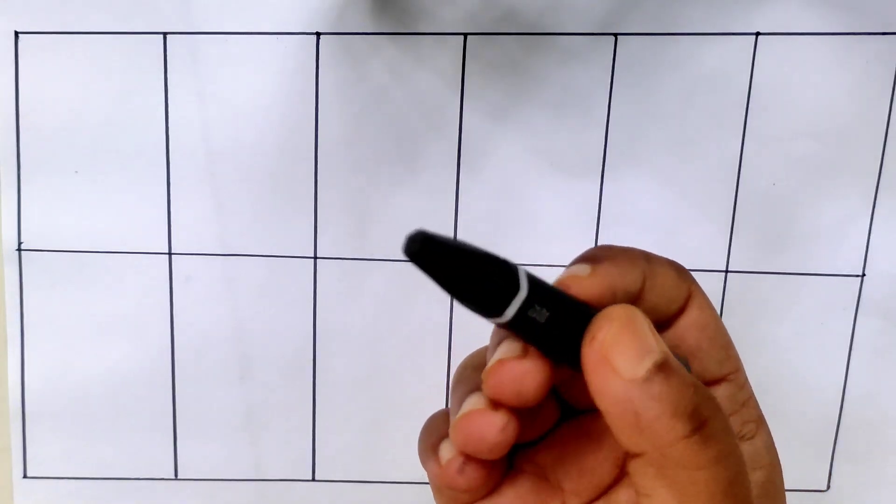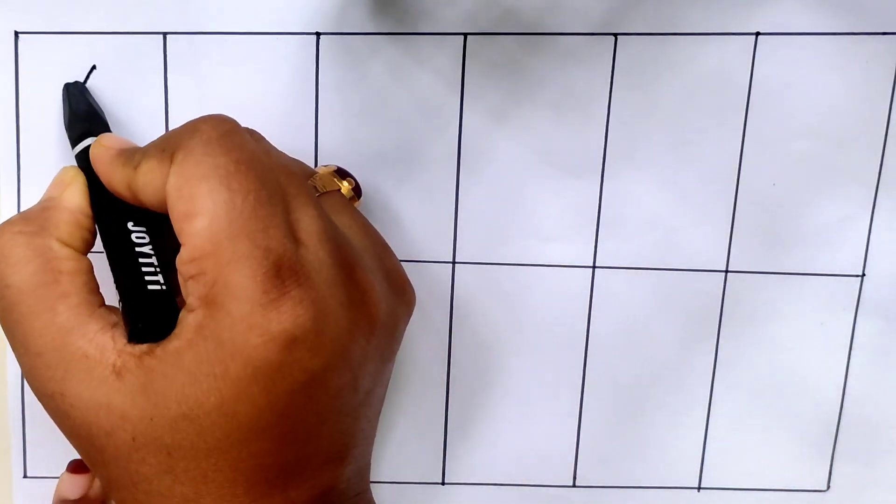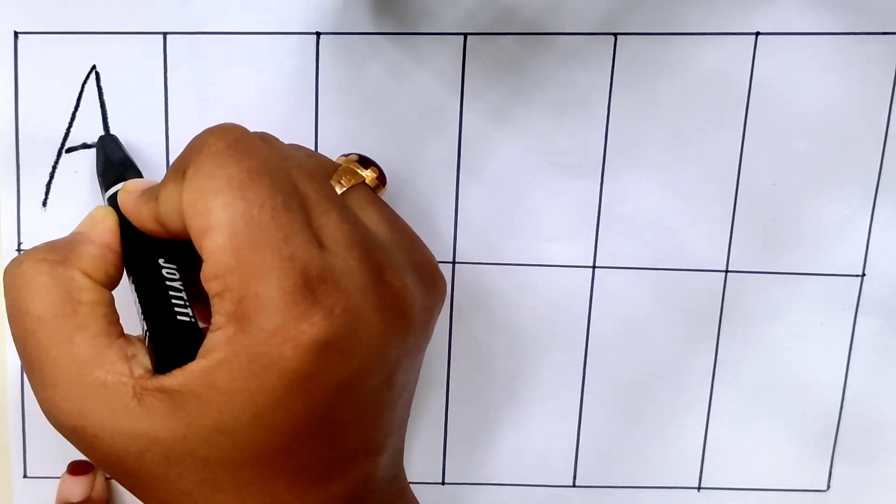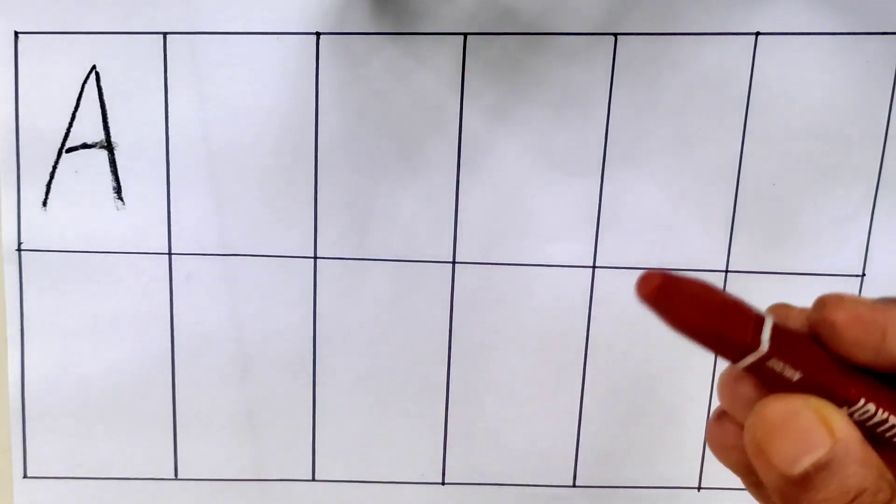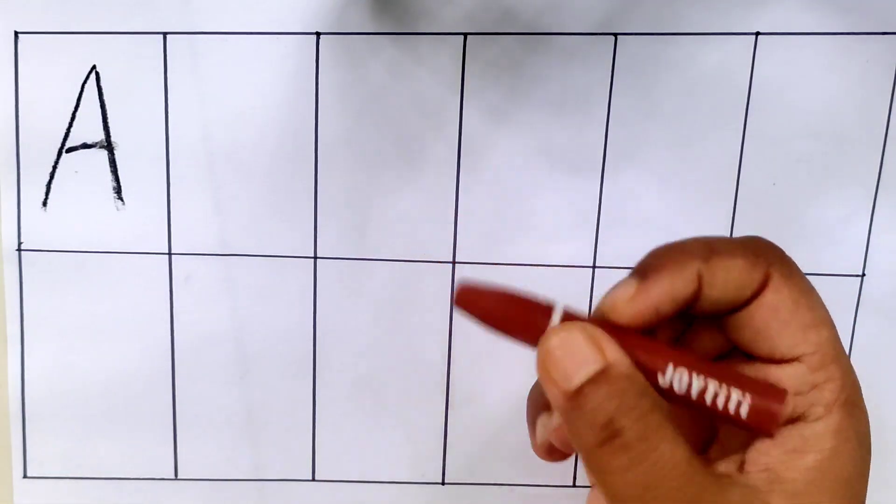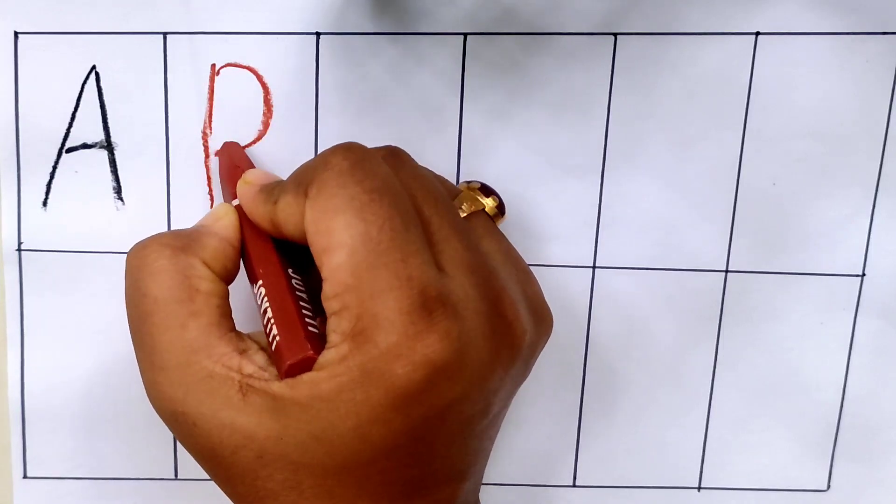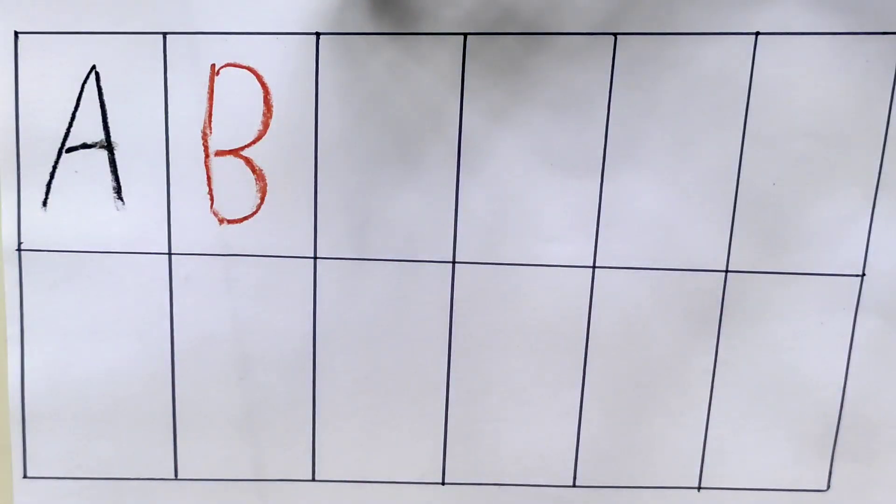Black color. A, a for apple. Brown color. B, b for ball.